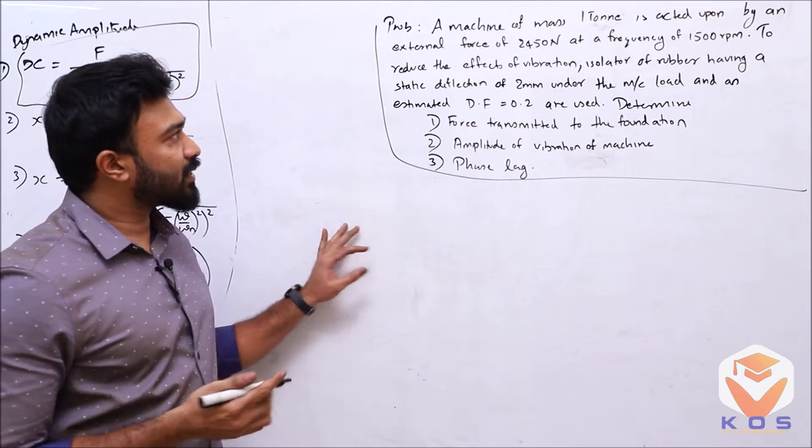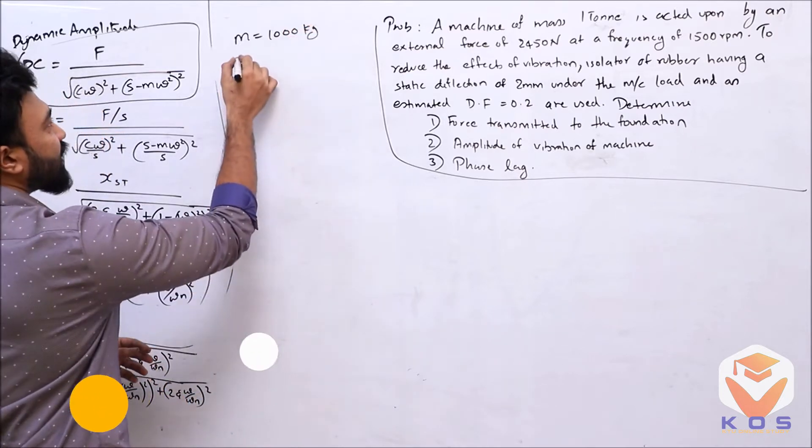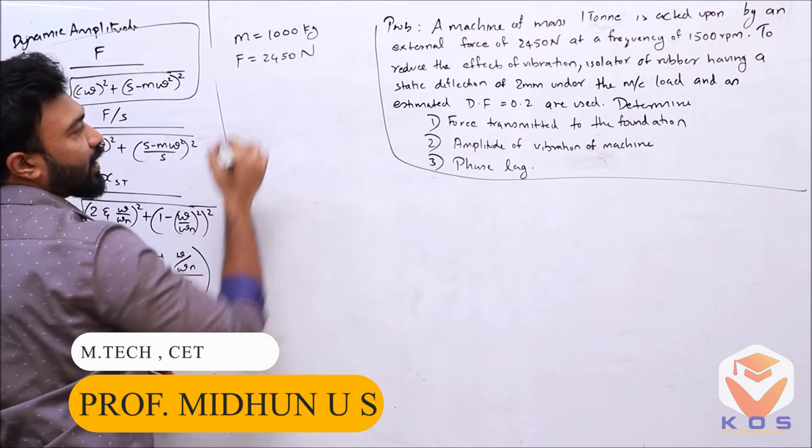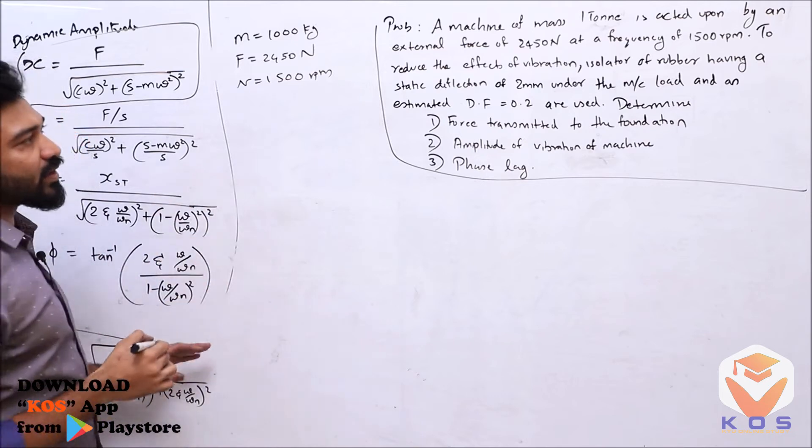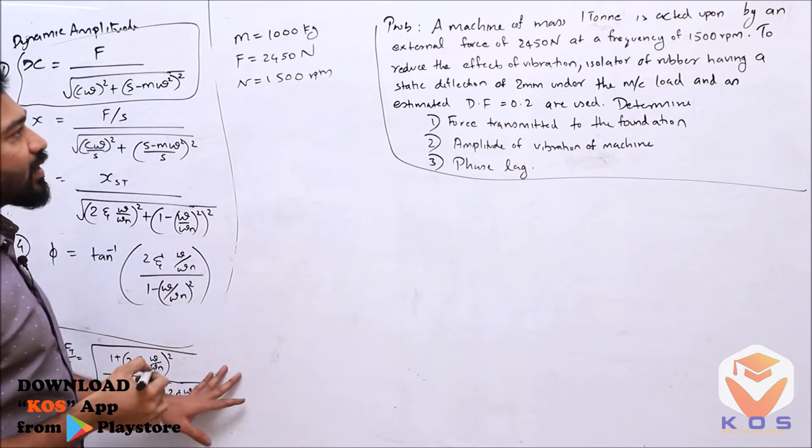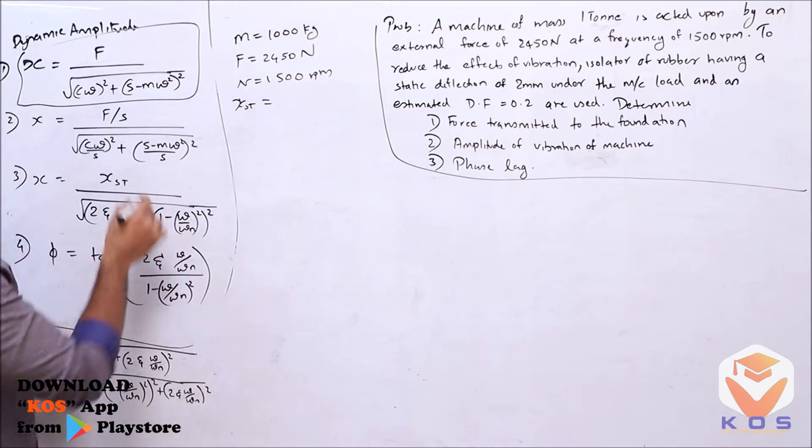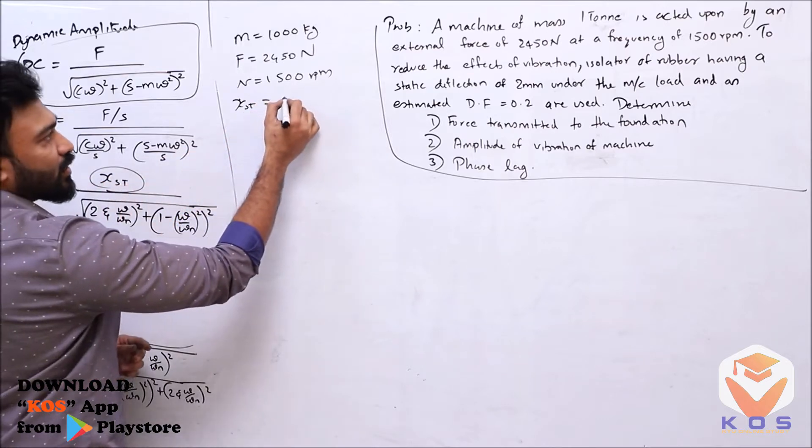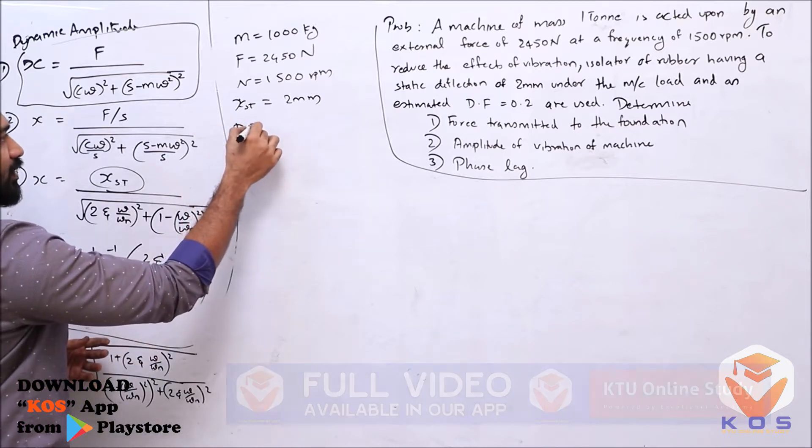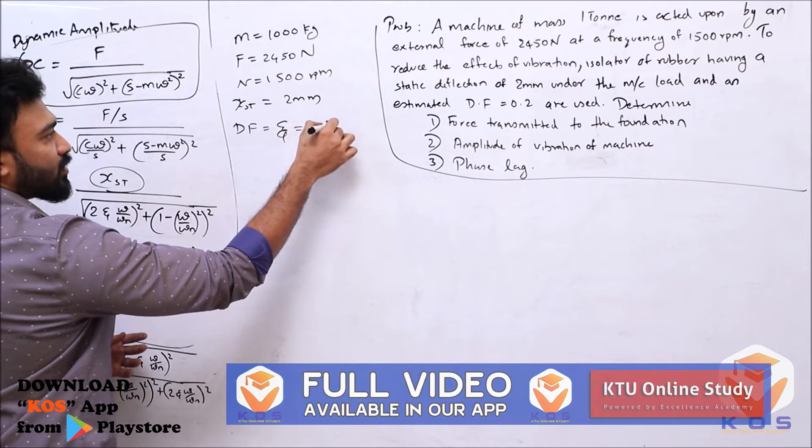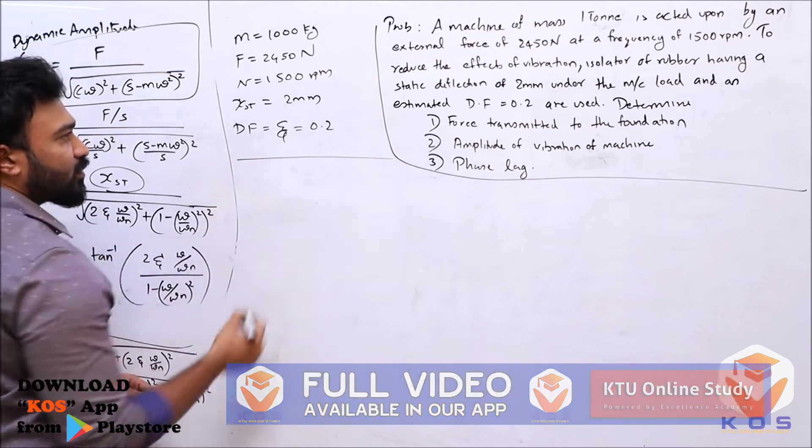See this problem: emission of mass m = 1000 kg is acted upon by an external force F = 2450 N at a frequency of 1500 rpm. To reduce the effect of vibration, an isolator of rubber having a static deflection of 2 mm and an estimated damping factor zeta = 0.2 is used. Determine the force transmitted to the foundation.